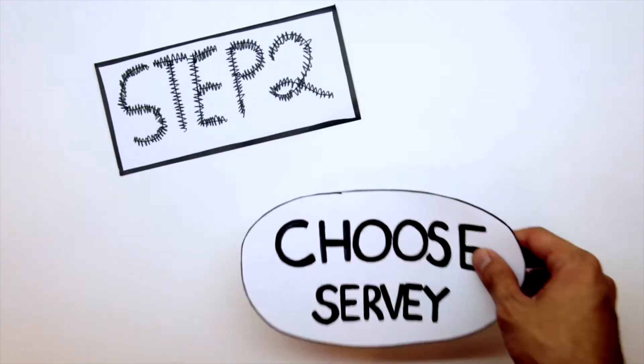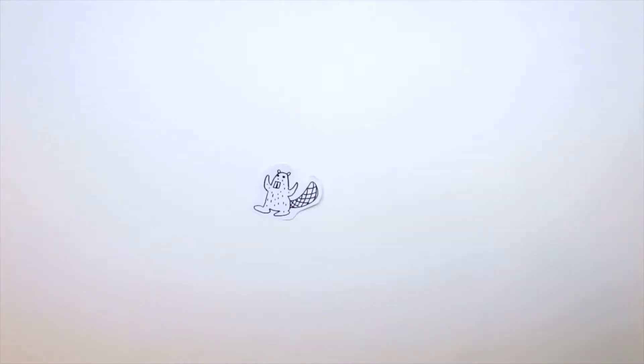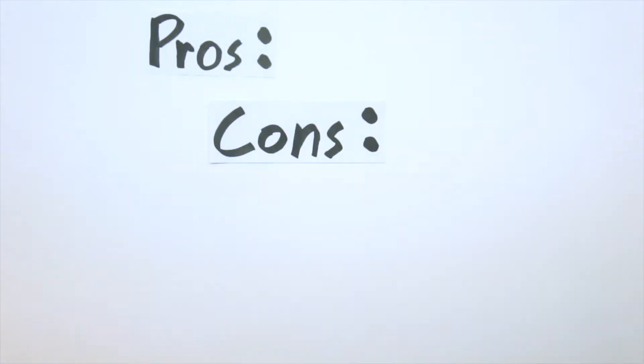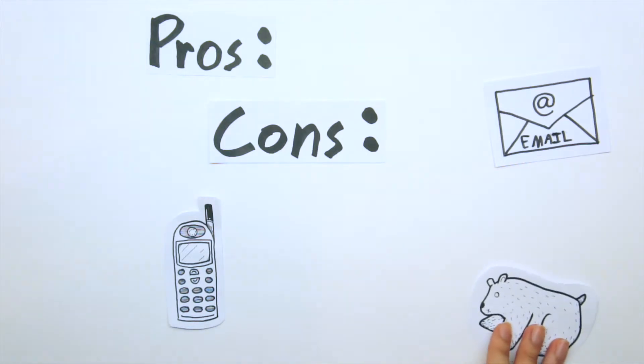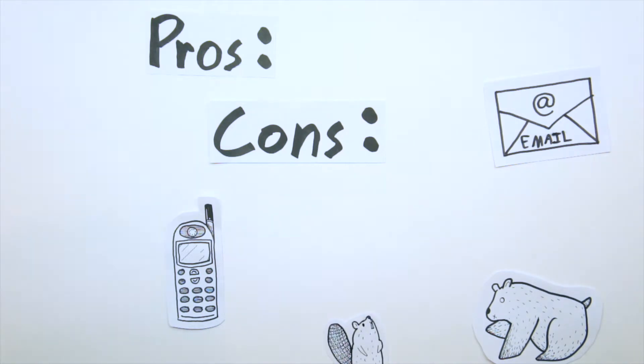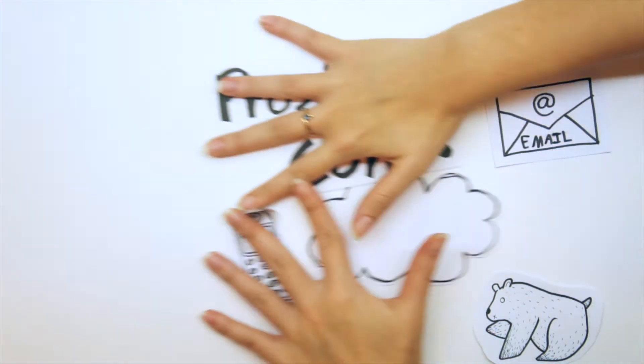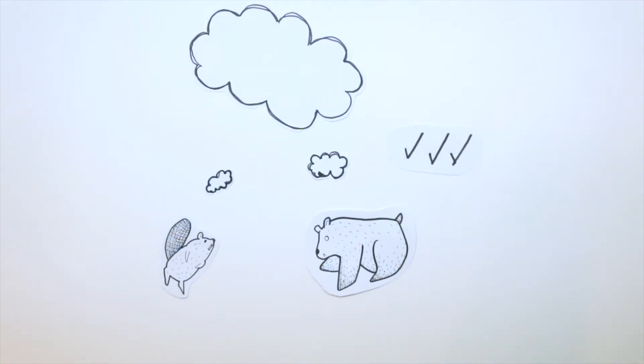Step two, choose survey. There are several methods to conduct a survey. First, by email. However, there is no feedback or qualification possible from this method. Second, by telephone. This method has to be simple and short and cannot contain graphical material for further understanding. Third, in person. This method is quite expensive and there is interviewer bias. We choose in-person method to solve the problem.